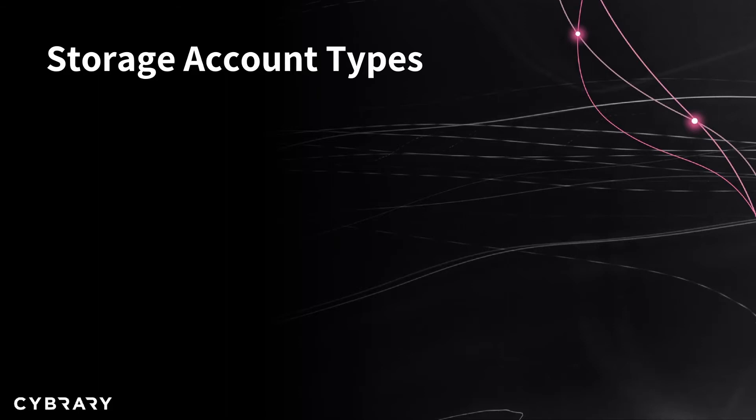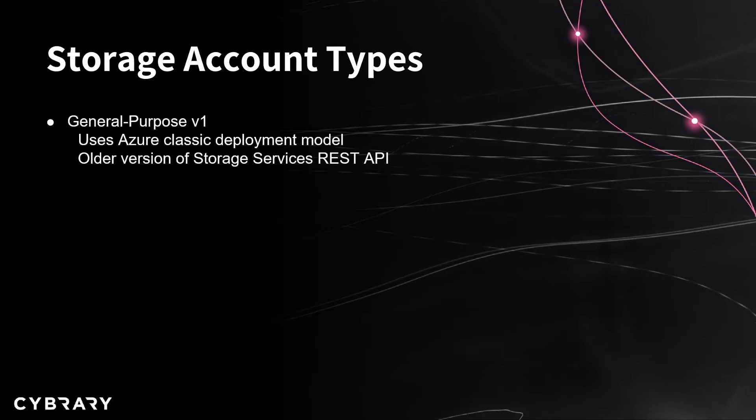Let's talk about our storage account types. The first type we have is general purpose v1. This is the older version of our storage accounts that use the Azure classic deployment model, and not the new Azure Resource Manager or ARM infrastructure we have today. You probably won't be provisioning general purpose v1 storage accounts, but there is one caveat: if for some reason you need to use an older version of the storage services REST API, maybe you have a custom application that is currently using this.